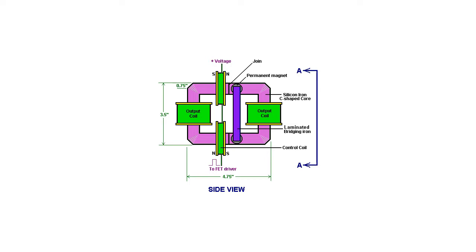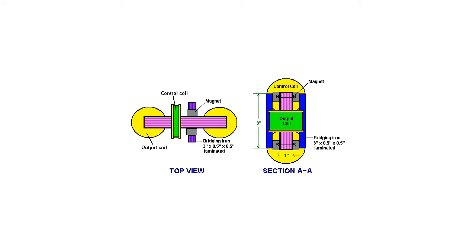The Motionless Electromagnetic Generator or MEG consists of a magnetic ring with output coils wound on it. Inside the ring is a permanent magnet to provide a steady magnetic flux around the ring.